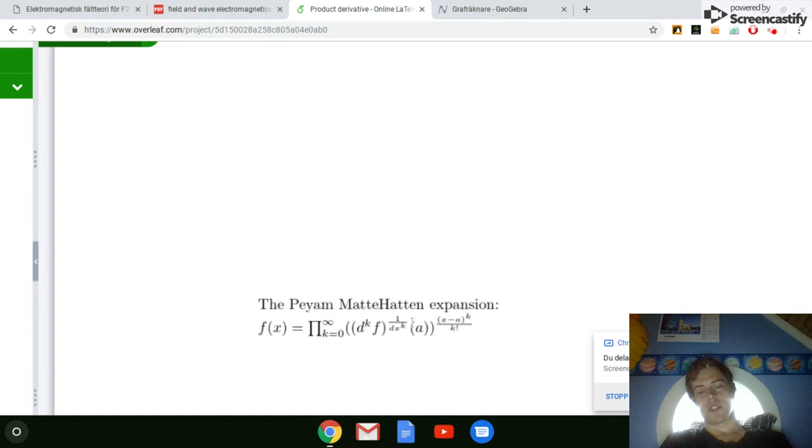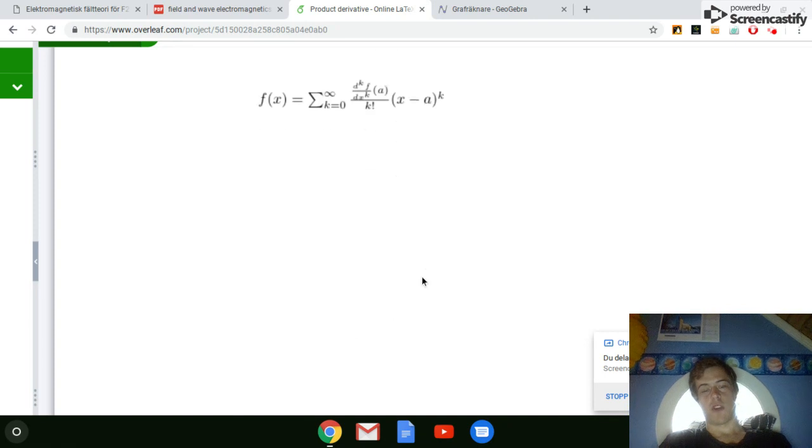And also, I'm not really sure if this is the best notation for product derivatives of higher orders. So, sorry, maybe we should have some kind of arrow notation here. It's not d to the power of k, maybe it should be d double arrow k or something. I don't really know. But this is just a very natural extension from this formula.